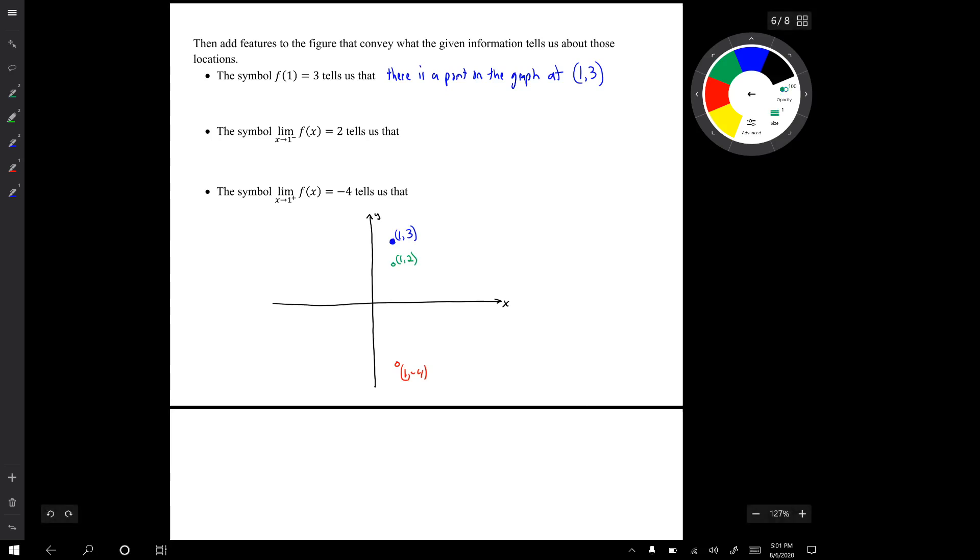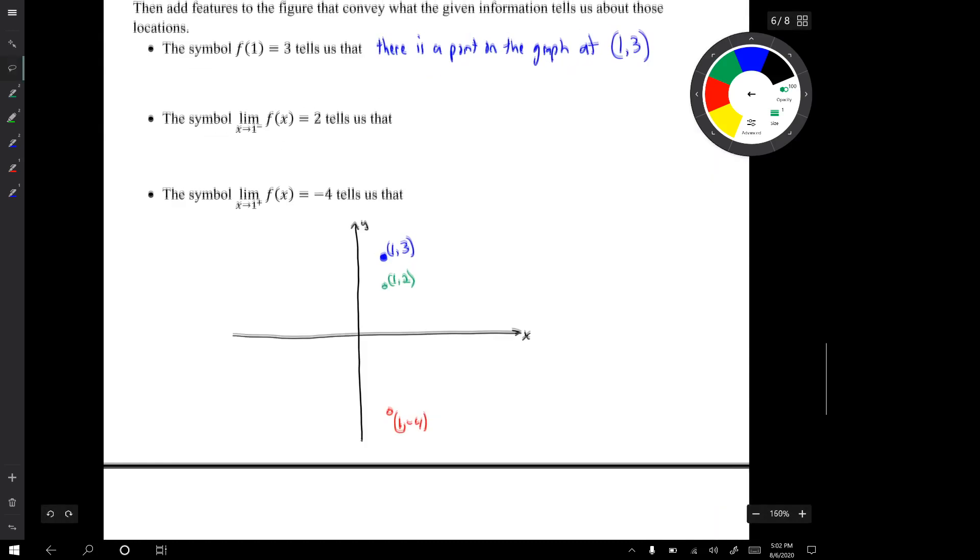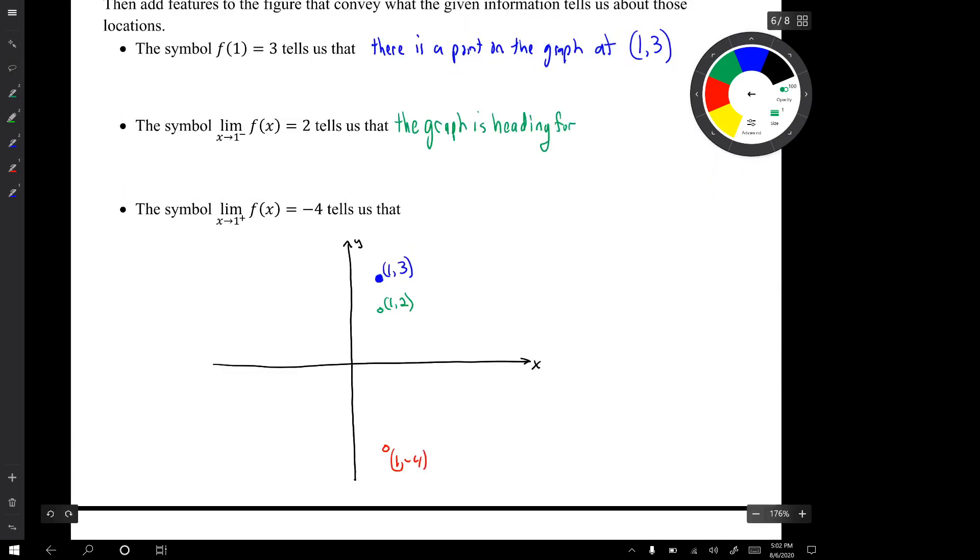The symbol limit as x approaches 1 from the left equals 2 tells us that the graph is heading for the location (1, 2) from the left. So we can convey that on the graph by just putting a little pigtail to the left of that location heading for that location.